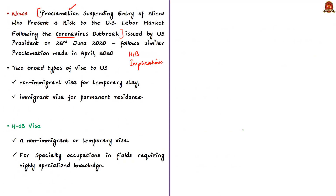A citizen of a foreign country who wishes to enter the United States must obtain a visa. There are two broad types: the non-immigrant visa, which is for temporary stay — employment under this category lasts only for a fixed temporary period — and the immigrant visa, which is for permanent residence in the USA. Remember that earlier in April 2020, the USA suspended issuance of immigrant visas for a period of 60 days.